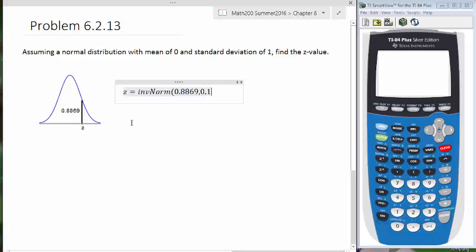In this case, it's 0 and 1. If you don't include the mean and standard deviation, it's going to automatically assume 0 and 1, which in most cases we're going to be using.